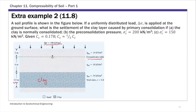We're going to calculate that settlement for three different scenarios: one, if the clay is normally consolidated; two, if the pre-consolidation pressure sigma c prime is 200 kN per meter squared; and three, if sigma c prime is 150 kN per meter squared. We are given the compression index Cc, and the recompression index is one-fifth of Cc.